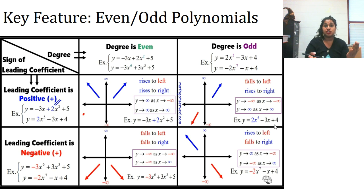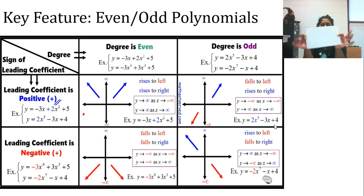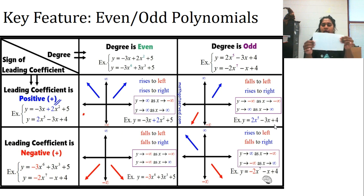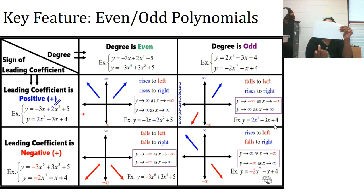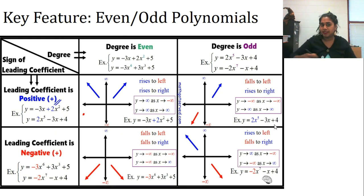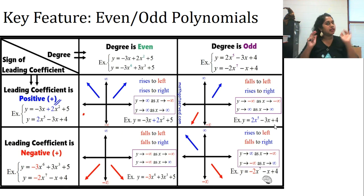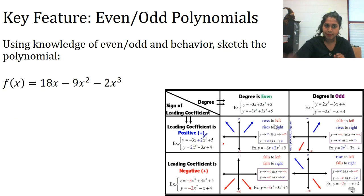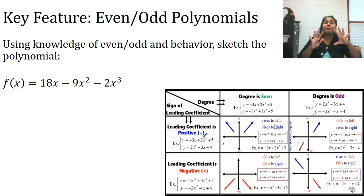I've given you a chart — I highly recommend you make some version of this. It's super simple: even, odd, positive, negative, up/down, down/up. If you want to take a screenshot, absolutely do it. Let's use even-odd behavior to get a basic sketch.